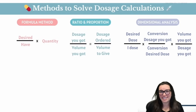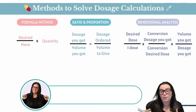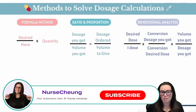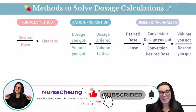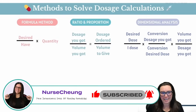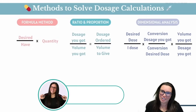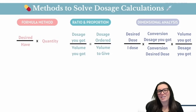As we've discussed, there are three ways to solve dosage calculations. You've got your formula method, which is what we're going to be discussing today, the ratio and proportion method, and dimensional analysis. So let's cover how we use equations using the formula method.